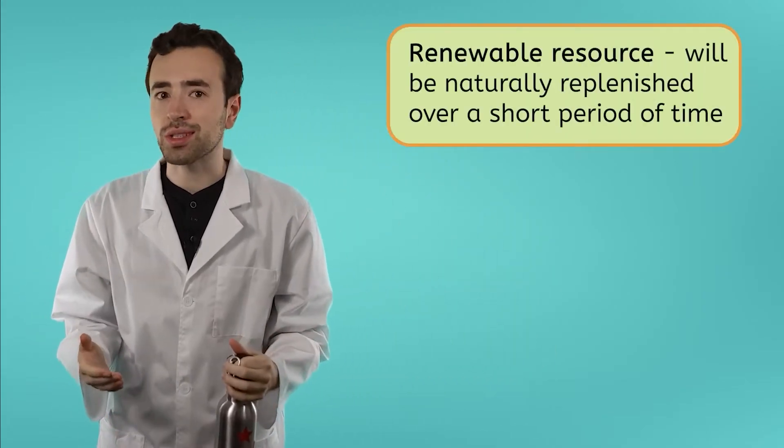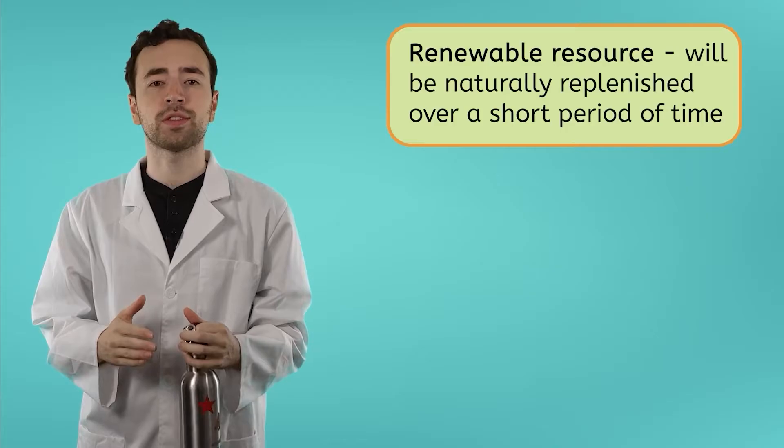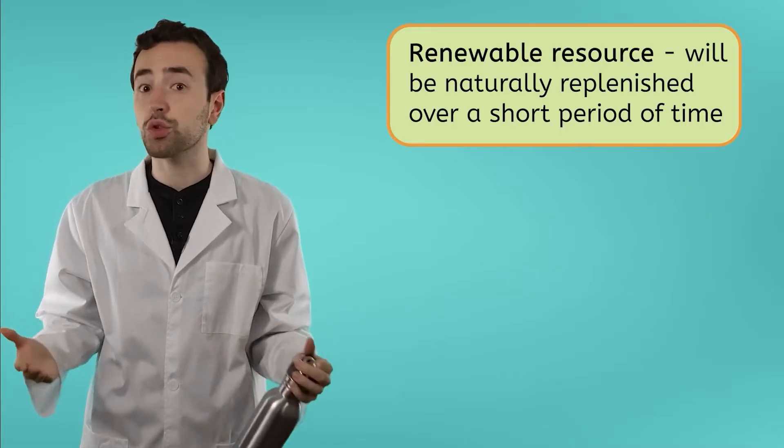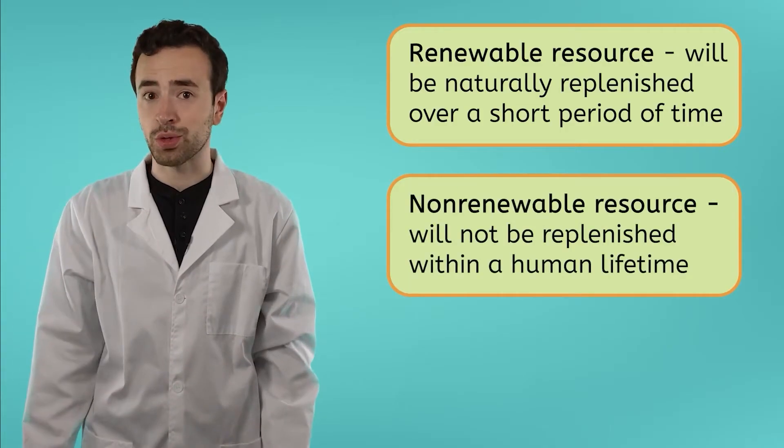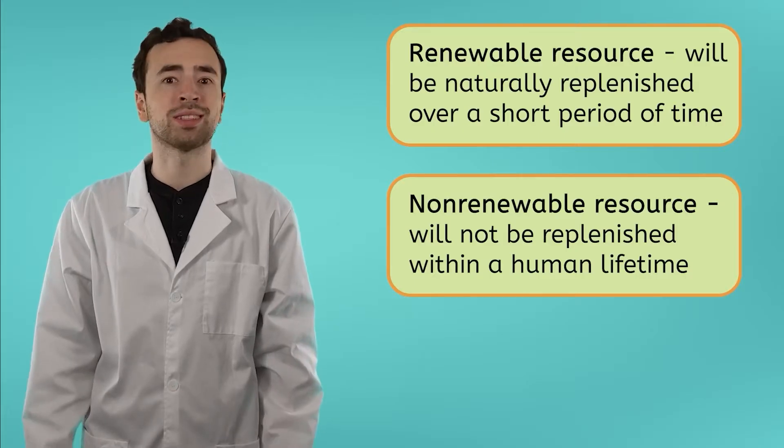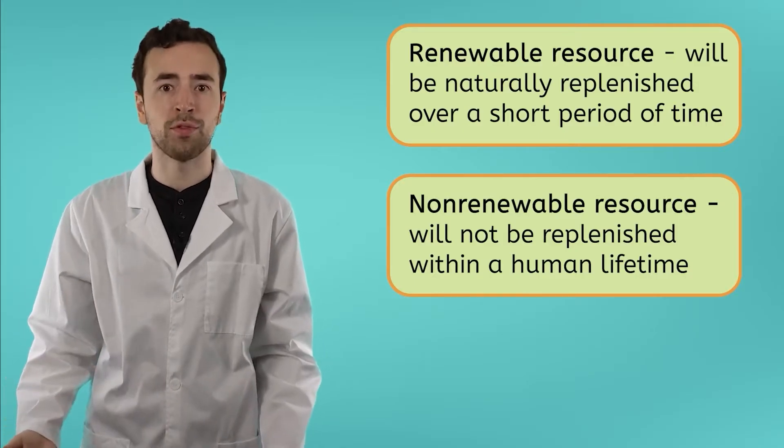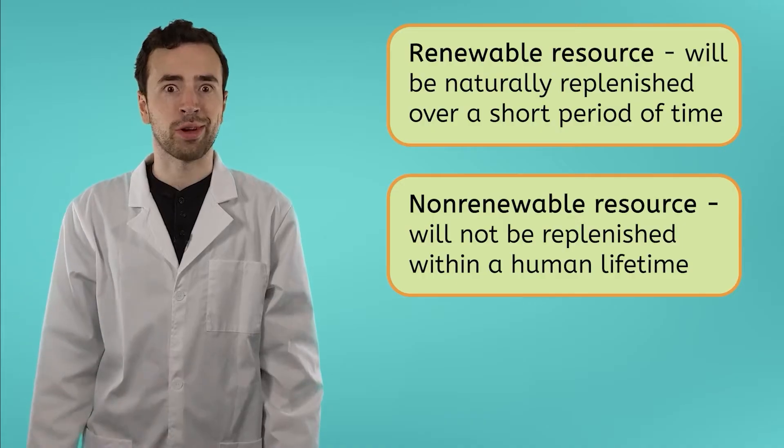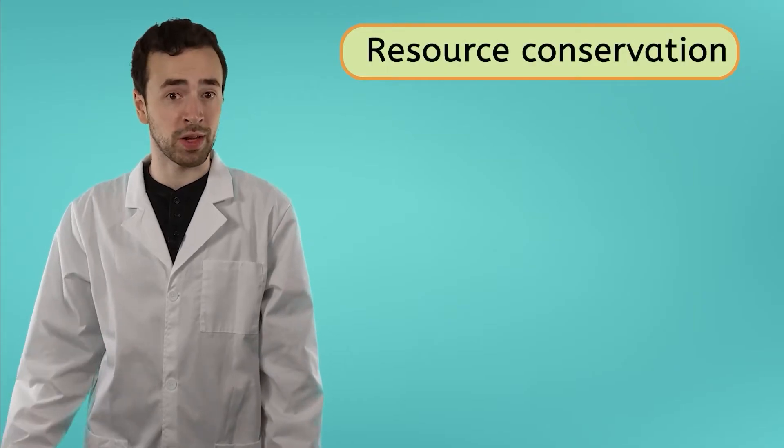In our last lesson, we learned about renewable and non-renewable resources. Remember, renewable resources are naturally replenished over a short period of time, like the wind and trees. Non-renewable resources, like fossil fuels, can run out since they take such a long time to form. Almost as long as that bike ride felt. Now, just because a resource is renewable doesn't mean we can use it carelessly. We need to use all of our resources wisely and efficiently. This is what we call resource conservation.